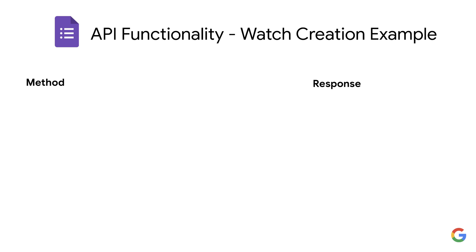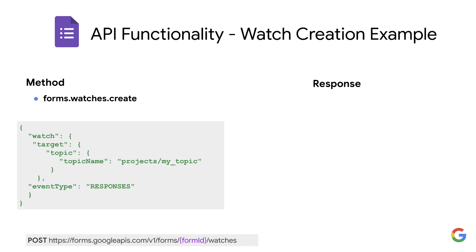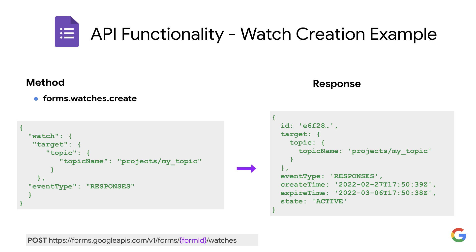Here's an example of the forms.watches.create method. It uses an HTTP POST with a JSON body which includes the Cloud Pub/Sub topic and which event type to watch for. The response will indicate that the new watch has been activated.